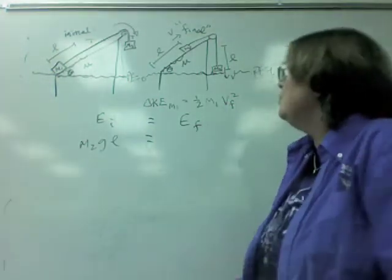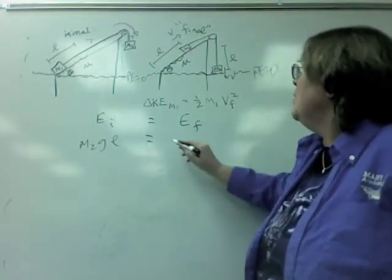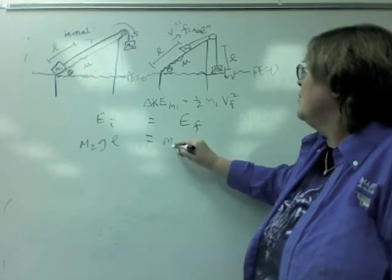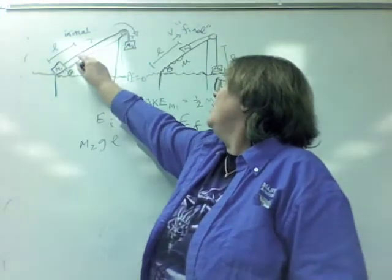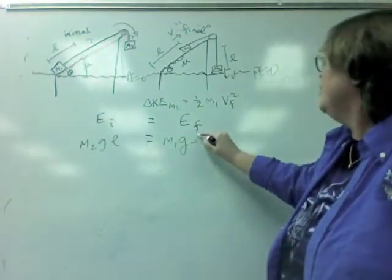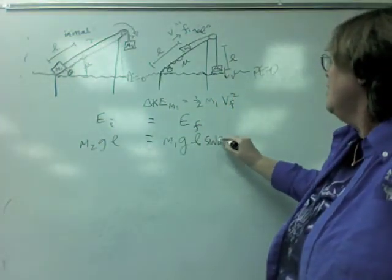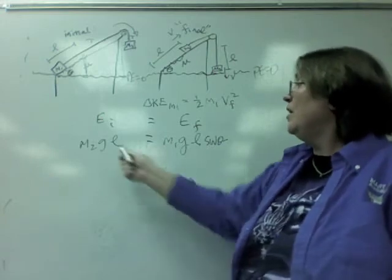And all the initial energy we have in the system is M2GL. Now, after M2's been dragged up a bit, it's now got some potential energy. How much potential energy? Well, we need to find this height, which is L sine theta.